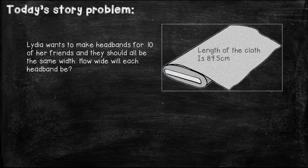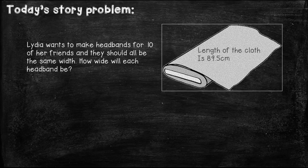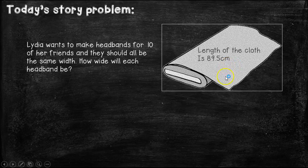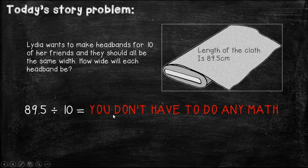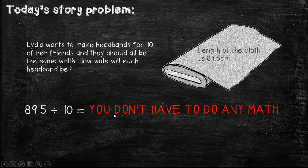Here's today's story problem. Our friend Lydia wants to make headbands for 10 of her friends and they should all be the same width. So how wide will each headband be? Well, the first thing we need to do is figure out, do we have enough information to solve the problem? And we do, because over here we know the length of the cloth is 89 and 5 tenths centimeters. And we know she wants to make headbands for 10 of her friends. So we're going to do 89 and 5 tenths divided by 10.